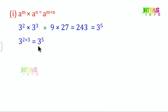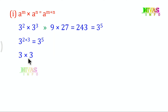When the base is the same, we get a single base. With same base and different exponents, we perform addition of exponents. The result is 3 power of 5. This is the first law of exponents: same base, multiply means add the exponents.